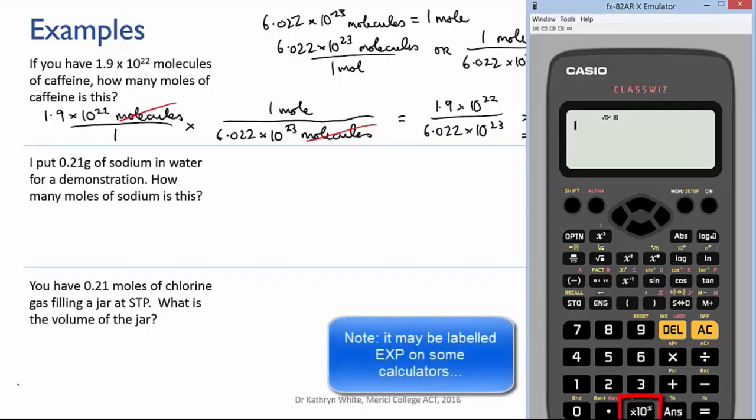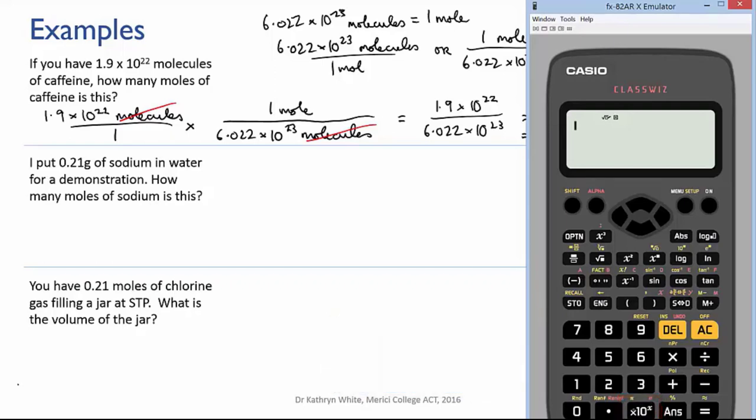So, for instance, to enter 1.9 times 10 to the 22, I would enter 1.9. Then I would press the times 10 to the button and then put in the exponent, 22. Now, if I add equals, you can see that formats the number correctly.